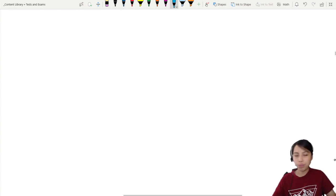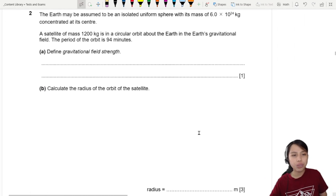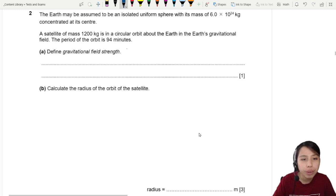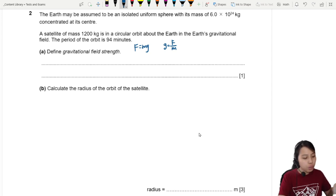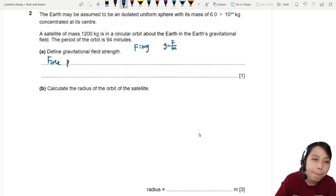Define gravitational field strength. Gravitational field strength is the one that we use the symbol g. It's also the same g in F equals mg. So if you want to define g, just rearrange: force per unit mass.